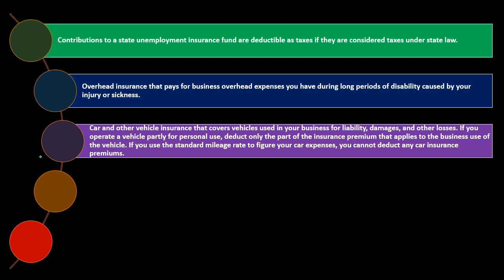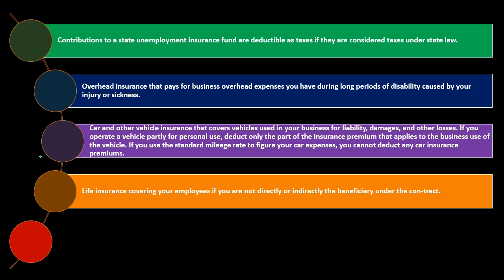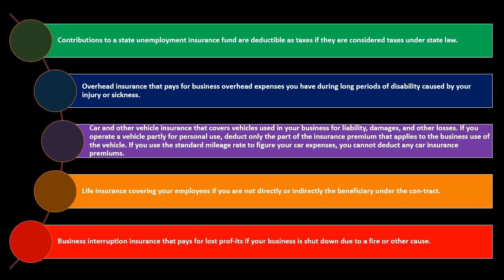If you use the standard mileage rate to figure your car expenses, you cannot deduct any car insurance premiums — you're using the simplified rate, so this wouldn't be added on separately. Life insurance covering your employees is deductible if you are not directly or indirectly the beneficiary under the contract. If you are the beneficiary — directly or indirectly — it may not be deductible. Business interruption insurance that pays for lost profits if your business is shut down due to a fire or other cause is also deductible.